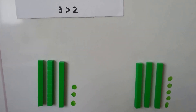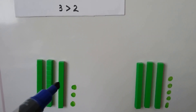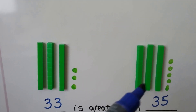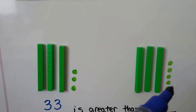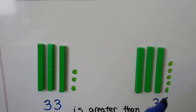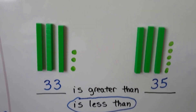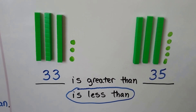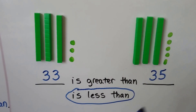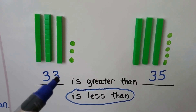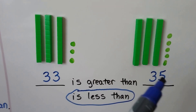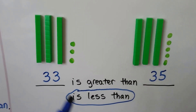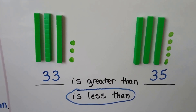Here we have 10, 20, 30, 31, 32, 33, 34, 35. 33 is less than 35. They have the same amount of tens, but there's only three in the ones place and that has five in the ones place. So 33 is less than 35.